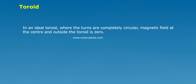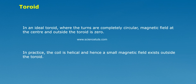In an ideal toroid, where the turns are completely circular, magnetic field at the center and outside the toroid is zero. In practice, the coil is helical and hence a small magnetic field exists outside the toroid.